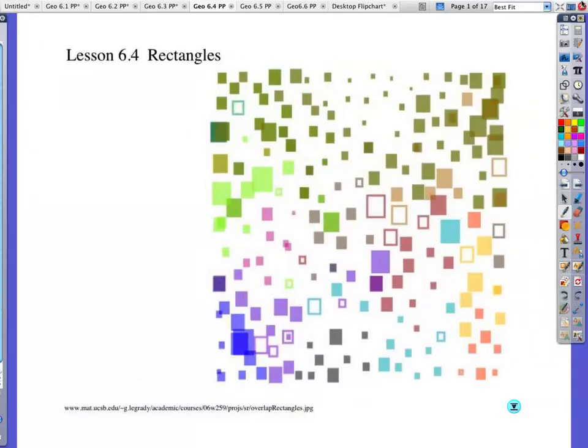Okay, we are looking at Lesson 6.4 Rectangles. Rectangles are, once again, if you look at that chart we have at the beginning of the chapter, a type of parallelogram, and a parallelogram is a special type of quadrilateral, so it's a four-sided figure.